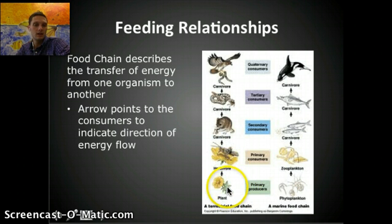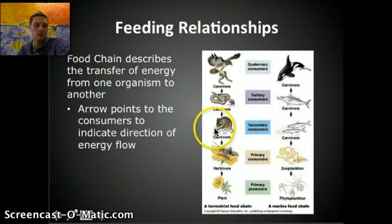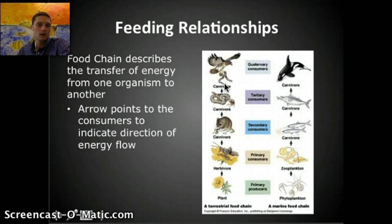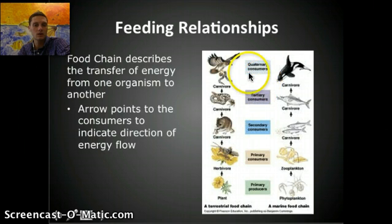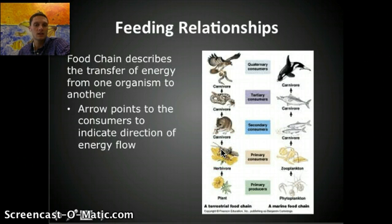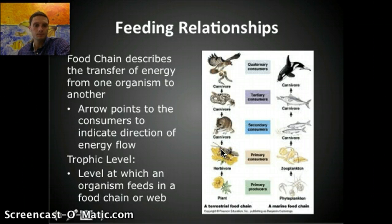In a food chain example, a plant is consumed by a herbivore, and that energy gets transferred. A mouse eats the herbivore, a snake eats the mouse, and a bird eats the snake. We can label these at different trophic levels: trophic level one through five, corresponding to producer, primary consumer, secondary consumer, tertiary consumer, and quaternary consumer. The direction of the arrow indicates which way energy is transferred. A trophic level is essentially the level at which an organism feeds in a food chain or food web.